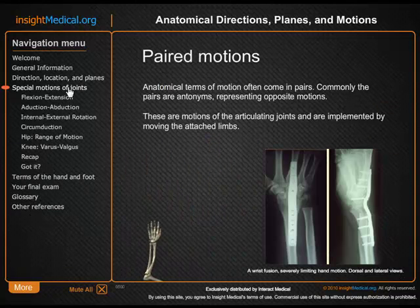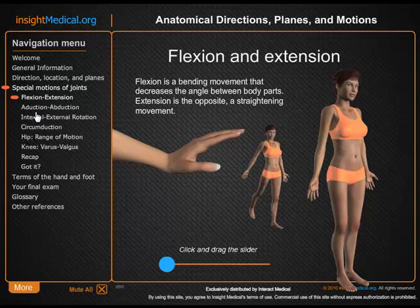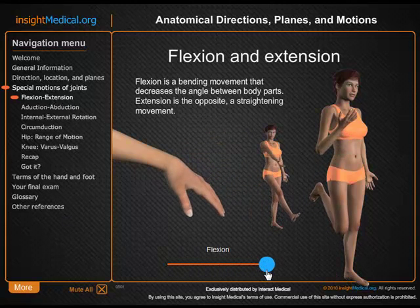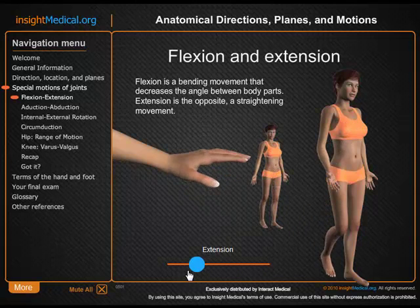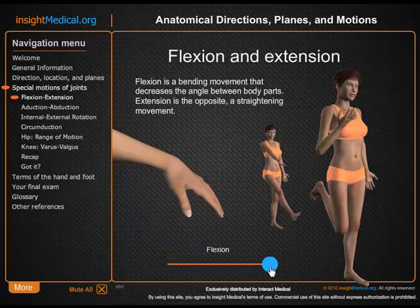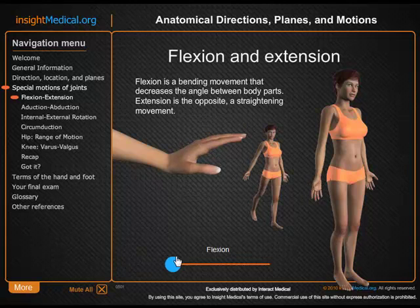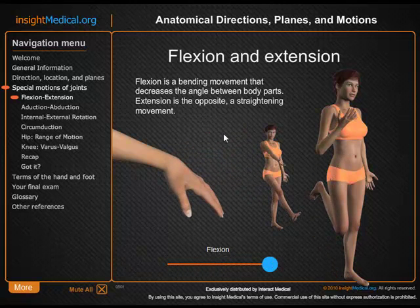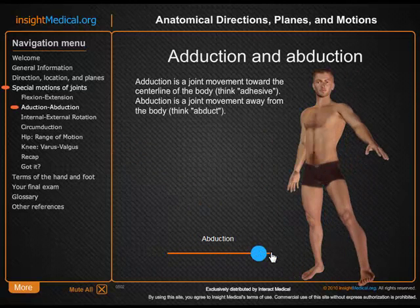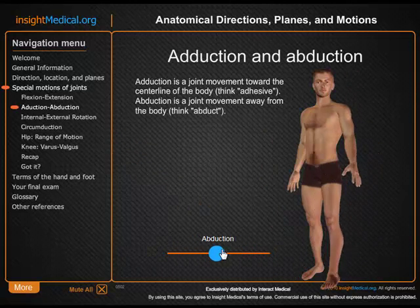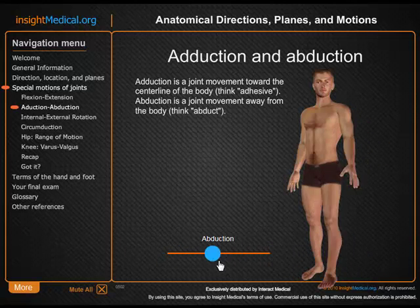Now we get into the special motions of the joint, such as flexion and extension. The motions are always portrayed in pairs, so you have flexion in one direction and extension in the opposite direction. Here you can see Jessica going through flexion and extension for several joints. We do the same thing for abduction and adduction, which makes it much easier to understand through simple animations and interactivity than simply looking at pictures.